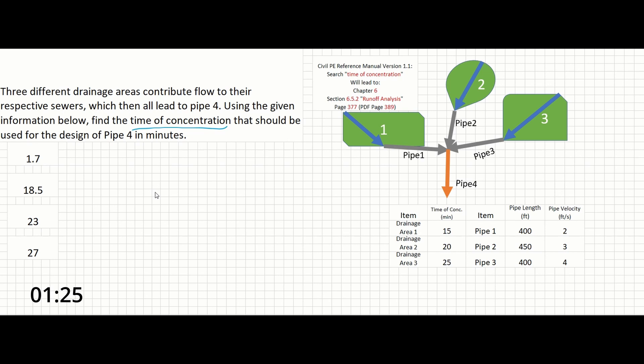That actually doesn't apply to this problem and would apply more if 1 drained to 2, which then drained to a pipe. But what we do have to do here is sum up all of the times from area 1 to pipe 1, area 2 to pipe 2, area 3 to pipe 3, and figure out which of those is the longest, as that will be the time of concentration to be used for the design of pipe 4. So let's get to it.